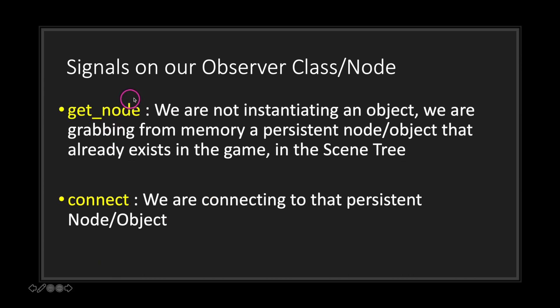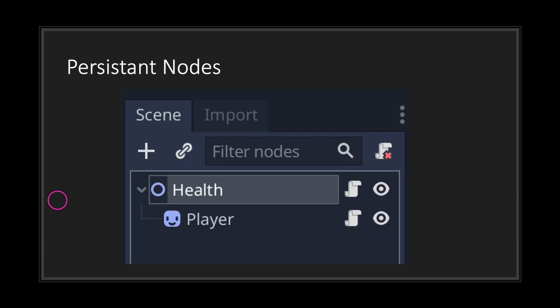You must use get_node — you do not want to instantiate a new object. Instead, grab a persistent node that already exists in your scene tree. You're connecting your class to a node you want to receive events from — not necessarily data, it could simply be knowing when an event happened in that class.